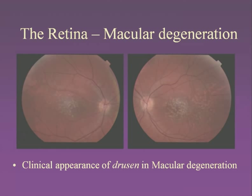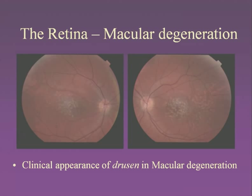Macular degeneration is a very common process seen in the elderly. It's a dysfunction of the RPE cells where they cannot keep up with the metabolic demands of the photoreceptor cells, leading to an accumulation of lipofuscin pigment clumps. We get these characteristic little yellow spots in the central retina which we call drusen.